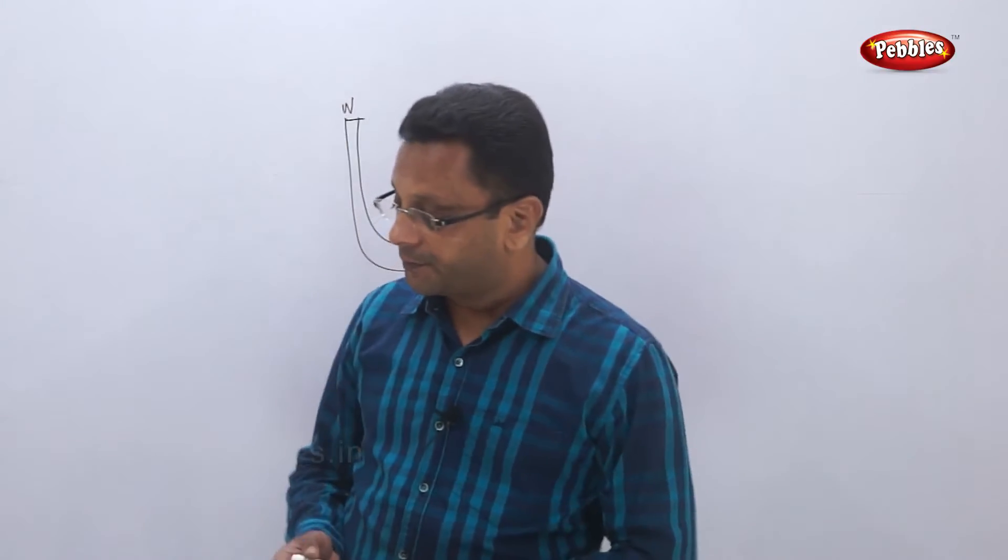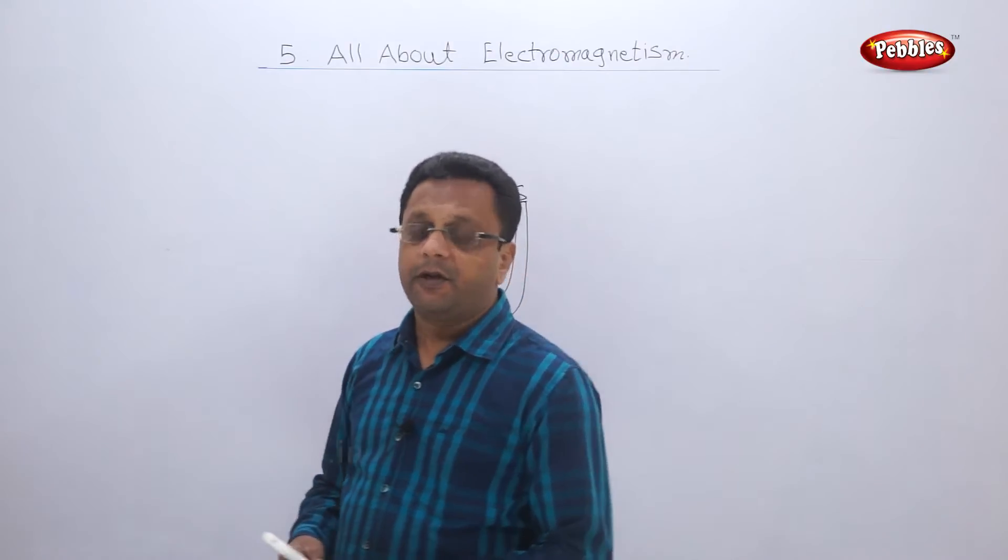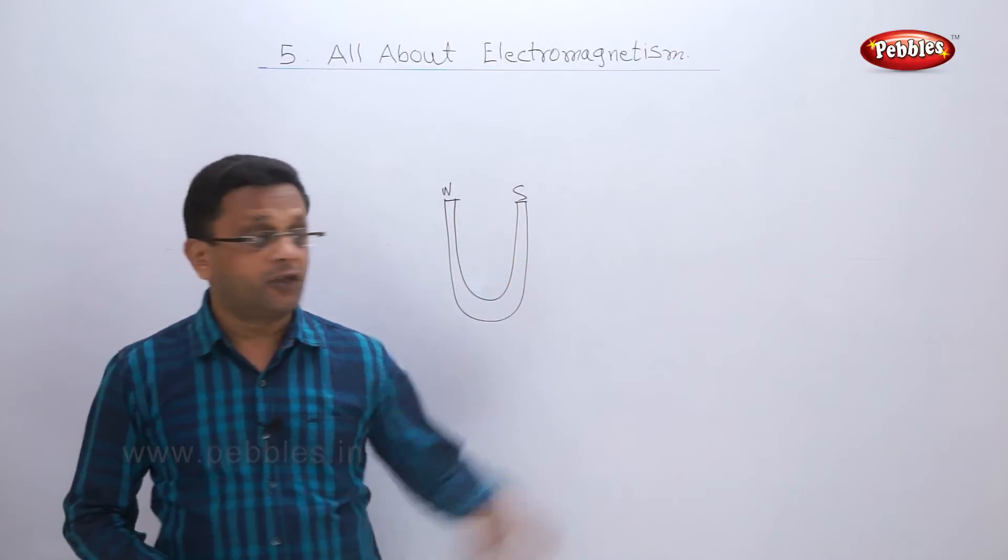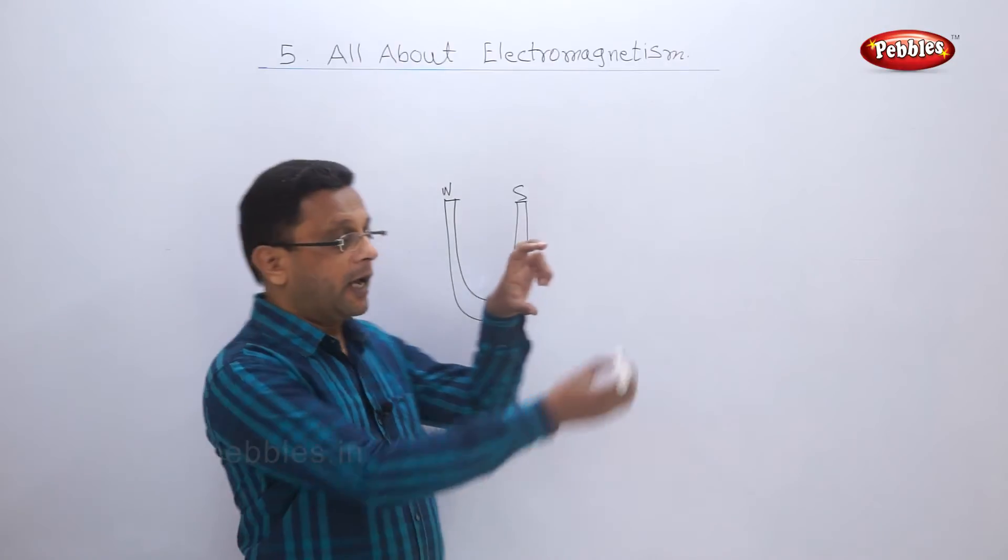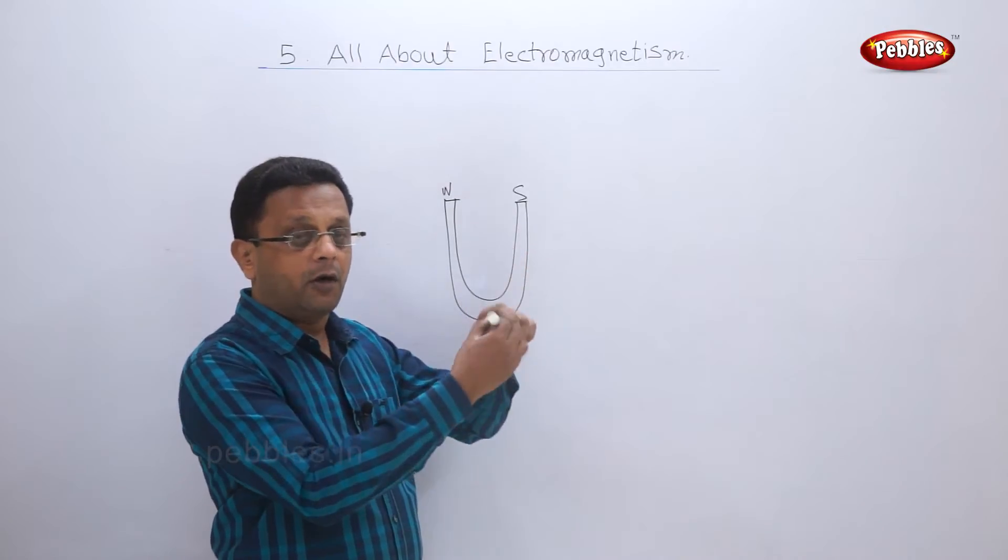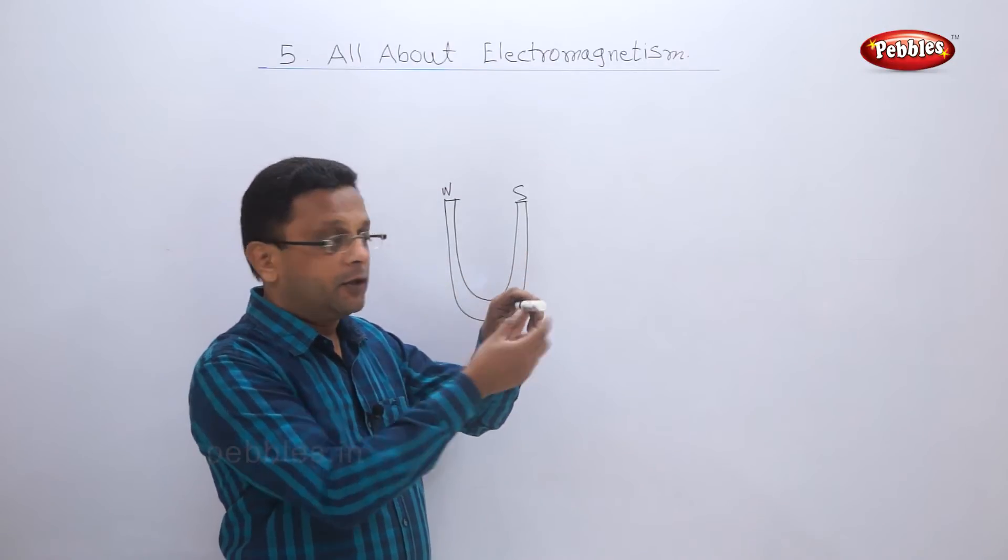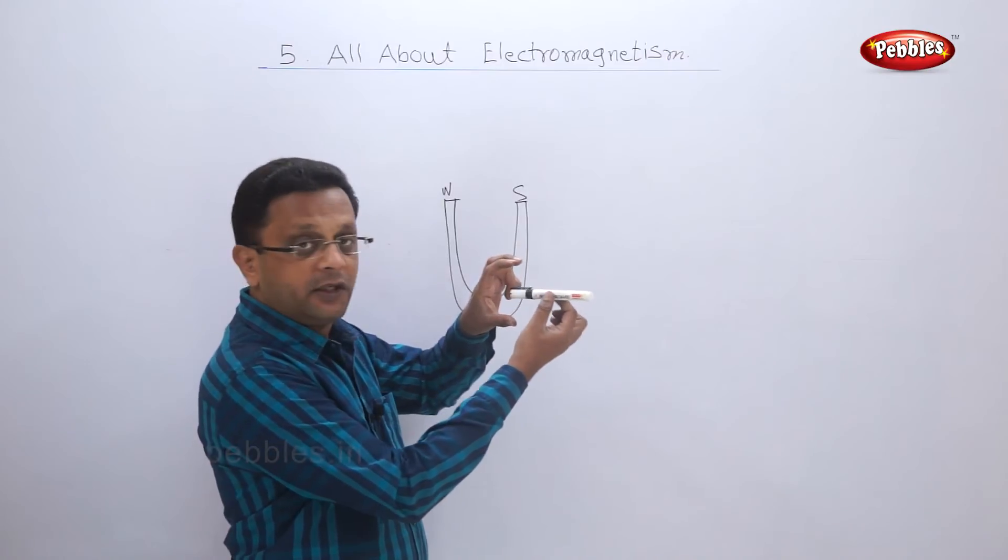Just now we have seen activity 5.7, in which we have seen one horseshoe magnet and one aluminum rod on which one coil is wound. This rod was free to move in this field, in this horseshoe magnet.